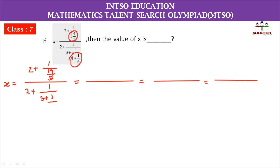The innermost part is 1 whole number plus 1 by 4. We will add using the cross multiplication method: 4 ones are 4, and 4 plus 1 is 5. So we get 5 divided by 4.